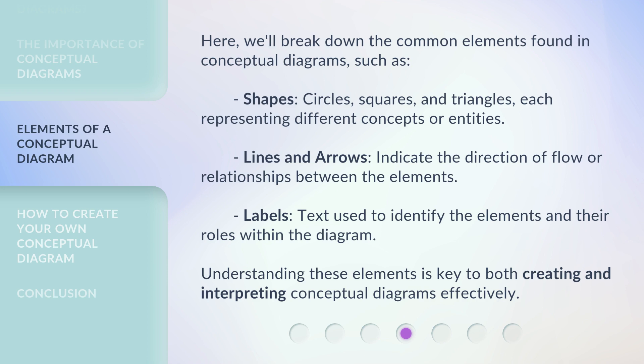Lines and arrows: Indicate the direction of flow or relationships between the elements. Labels: Text used to identify the elements and their roles within the diagram. Understanding these elements is key to both creating and interpreting conceptual diagrams effectively.